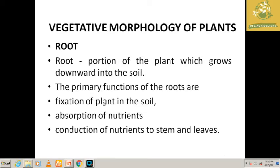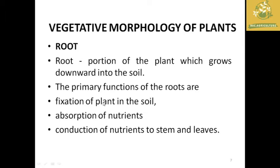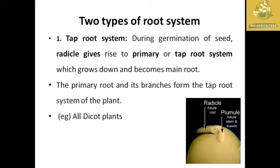Now we look at the vegetative morphology of plants, starting with roots. Roots grow downward into the soil. The primary functions of roots are fixation of the plant in soil, absorption of nutrients, and conduction of nutrients to the stem and leaves.